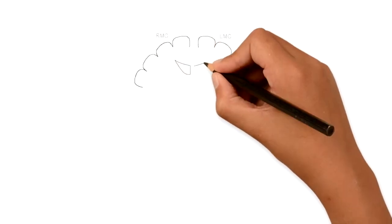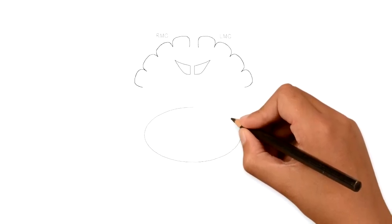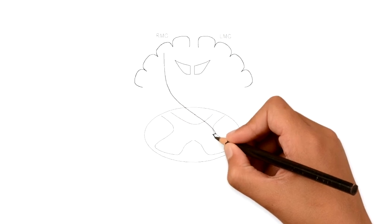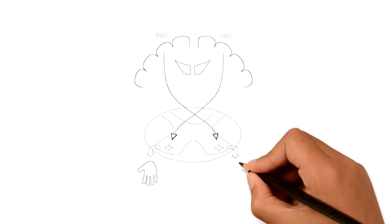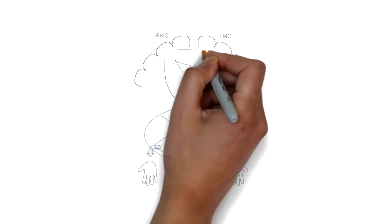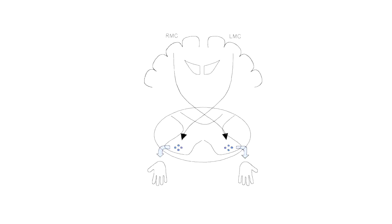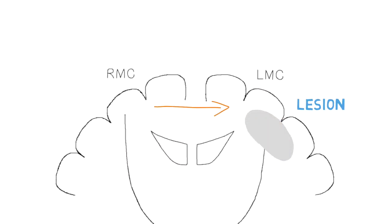The second mechanism is related to bilateral motor cortex activation. Evidence from the literature comes mainly from typically developing children and children with bilateral brain injury. This mechanism is generally believed to be related to the immaturity of the transcallosal pathways, which connect the two motor cortices and typically inhibit signals from one hemisphere to the other.